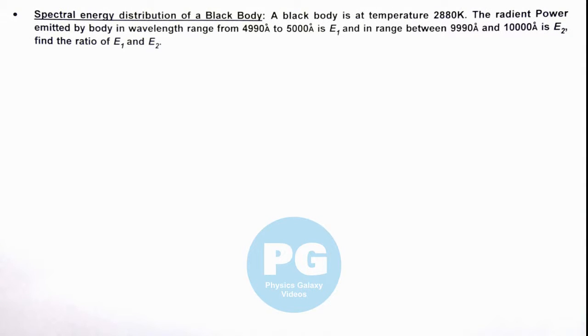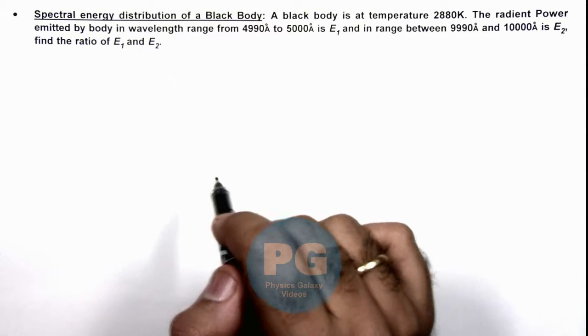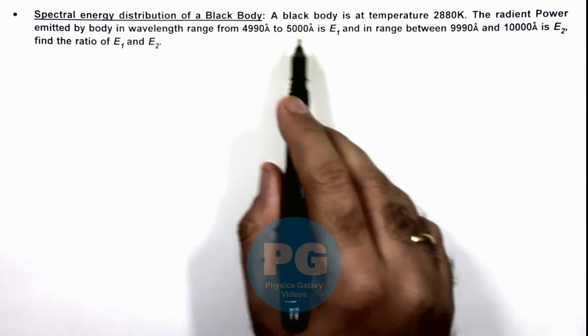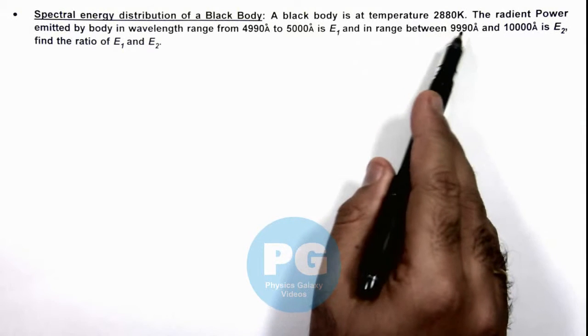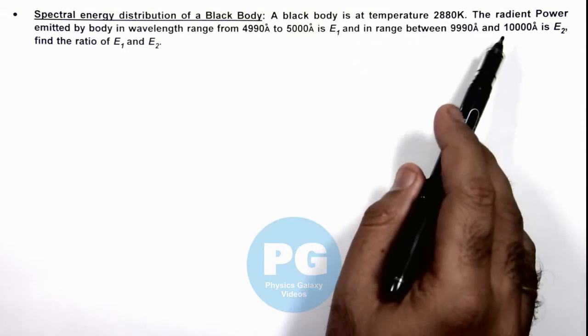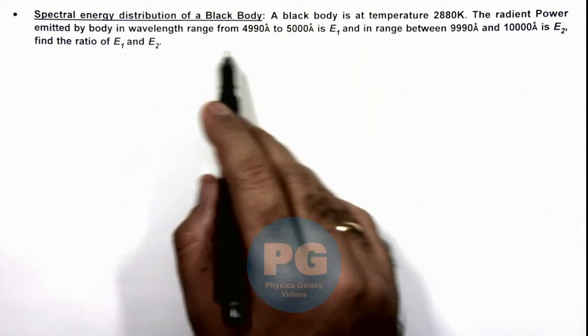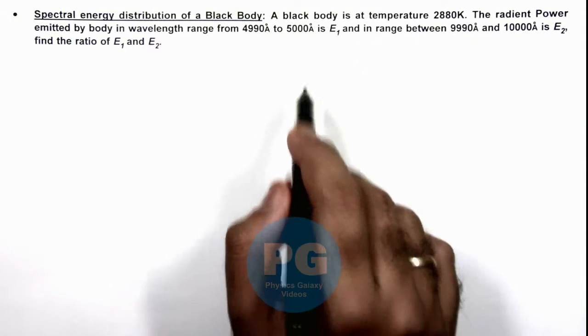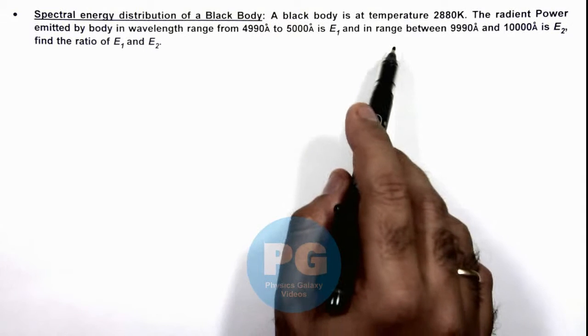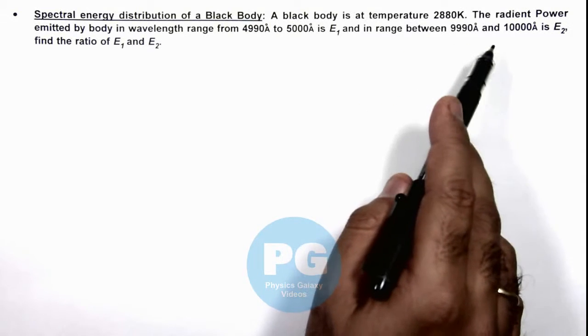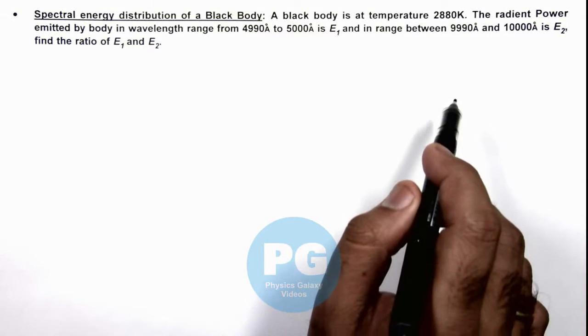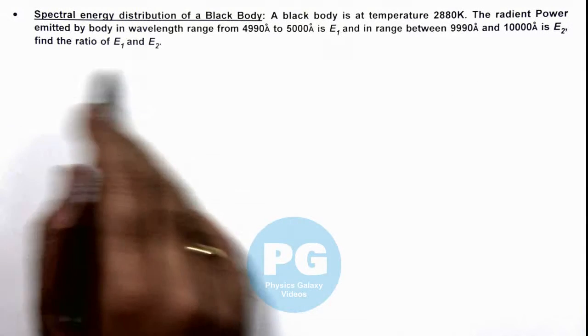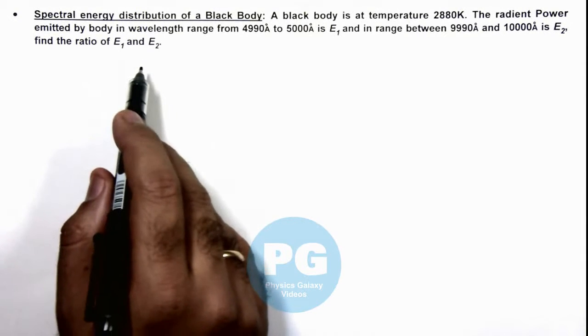In this illustration we'll analyze the spectral energy distribution of a black body. We are given that a black body is at temperature 2800 Kelvin, and the radiant power emitted by the body in wavelength range from 4990 angstrom to 5000 angstrom is E1, and in range between 9990 angstrom and 10,000 angstrom is E2. Here we are required to find the ratio of E1 and E2.